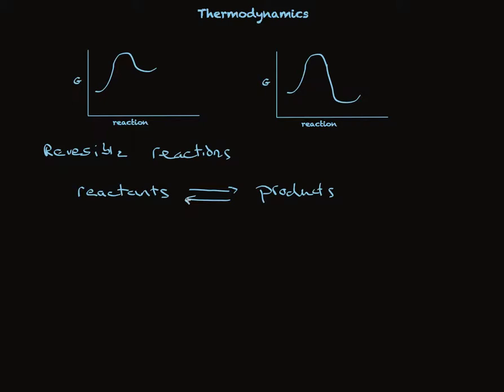For the energy diagram on the left, the change in free energy is positive. This is energetically uphill, and as a result, the reactants are favored.